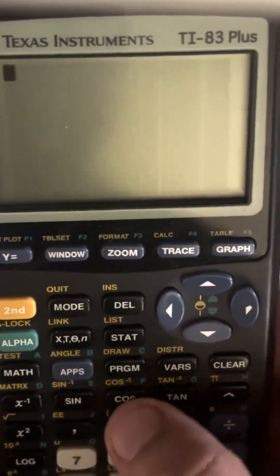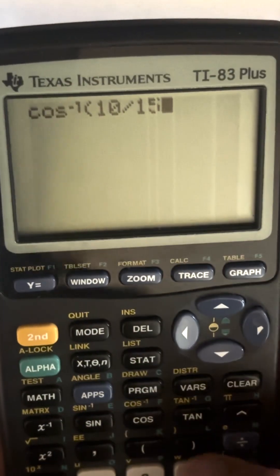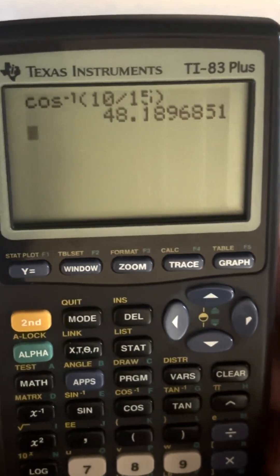All right, let's check our work. So we're going to do inverse operation of cosine 10 divided by 15, close parentheses, 48 degrees.